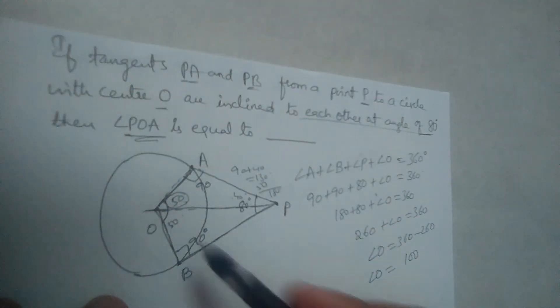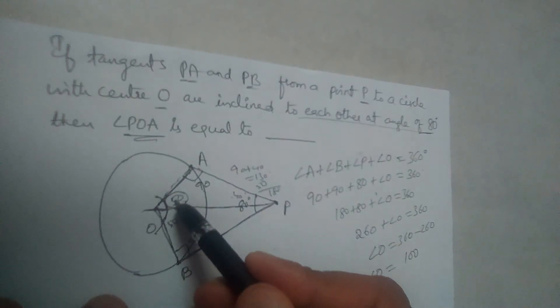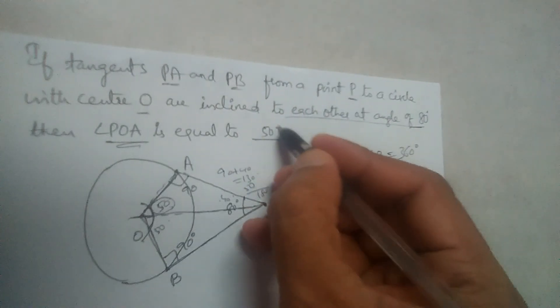I hope you understood this problem. So we found the angle O and then we half that. So angle POA is equal to 50 degrees.